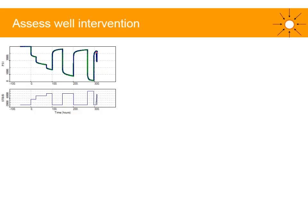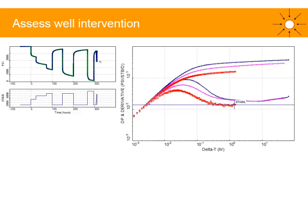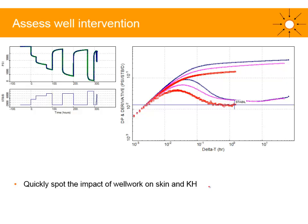Now assume that after the third PBU, a well intervention was performed: we entered the well, perforated a new sand, flowed the well, took a production flow test, and performed a small stimulation on the lower interval. The post-intervention response in red shows a shift downwards in the derivative. With a reliable production flow test confirming the rate, this shift indicates a gain in KH — by perforating a new layer not previously in communication with producing layers — and a slight decrease in skin. By comparing pre- and post-intervention derivative overlays, you can quickly assess the impact of well work on skin and KH.